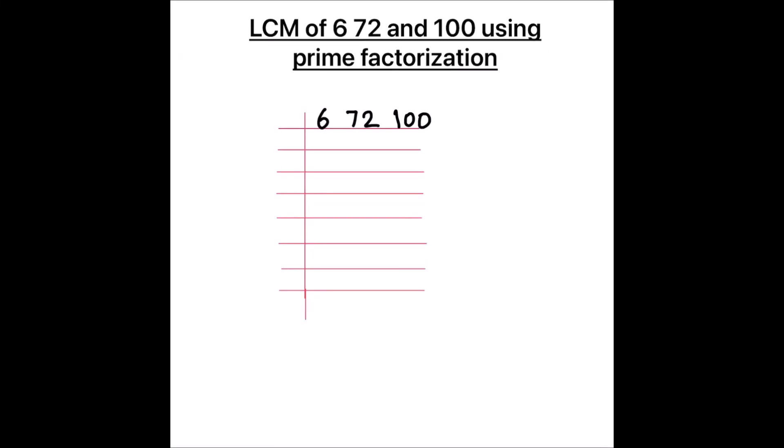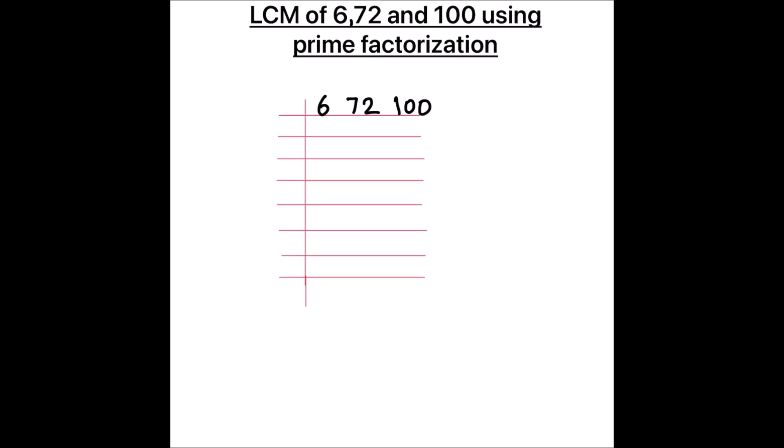Hello students. In this video we are going to learn how to find the LCM of 672 and 100 using the prime factorization method. In this method we divide numbers using prime numbers, find the factors of the numbers, and after finding the factors we can find the LCM by taking the product of those factors.